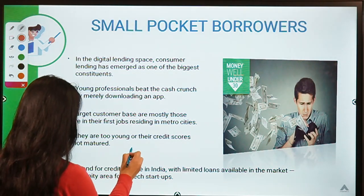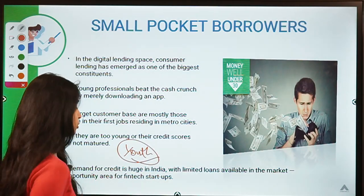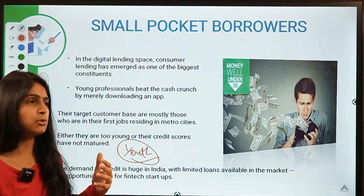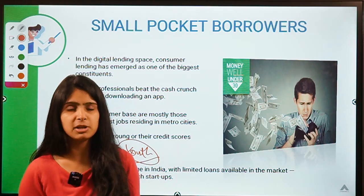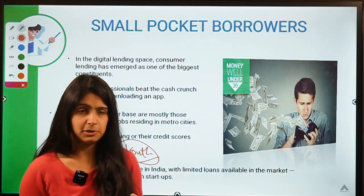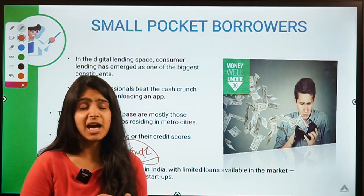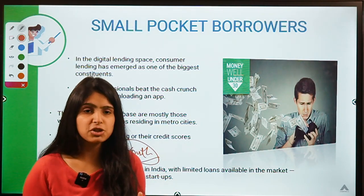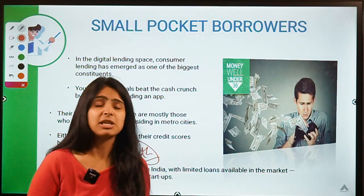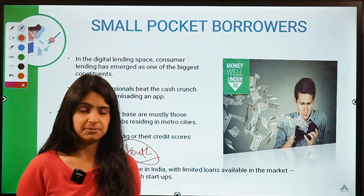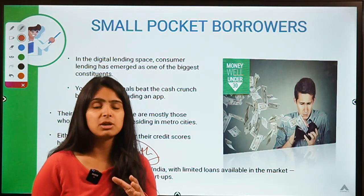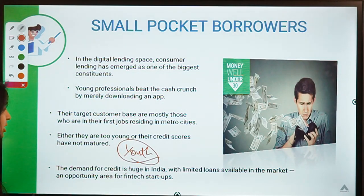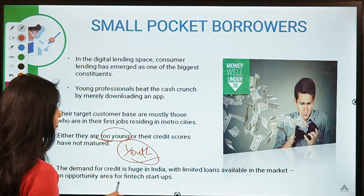The target population is mostly youth or young professionals because they are much more equipped with technology compared to mature adults. Young people want to avail goods and services with as little human interaction as possible, whereas older people may prefer going to a bank and talking to a manager they know personally. So the target audience for digital lending is usually young people or young professionals.